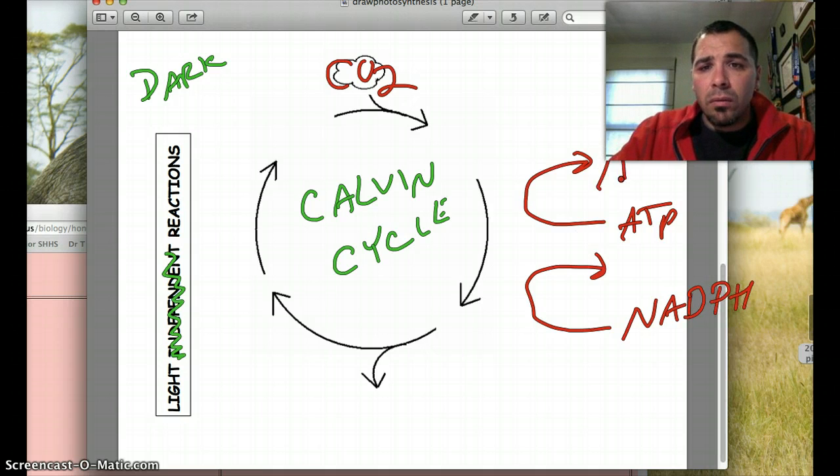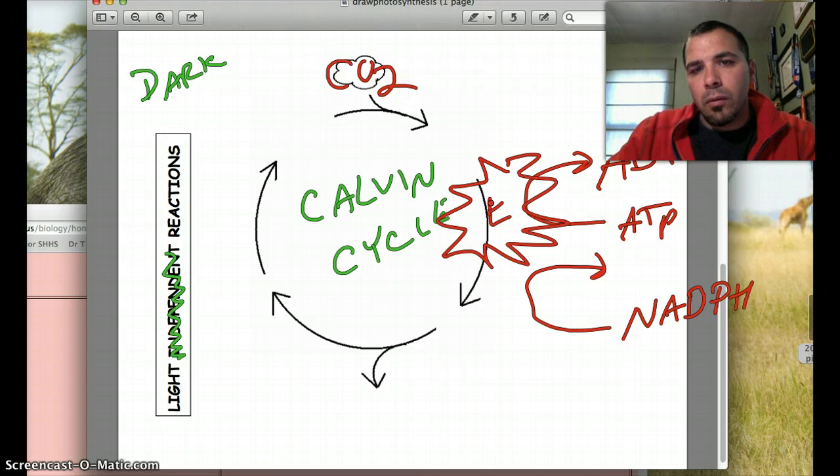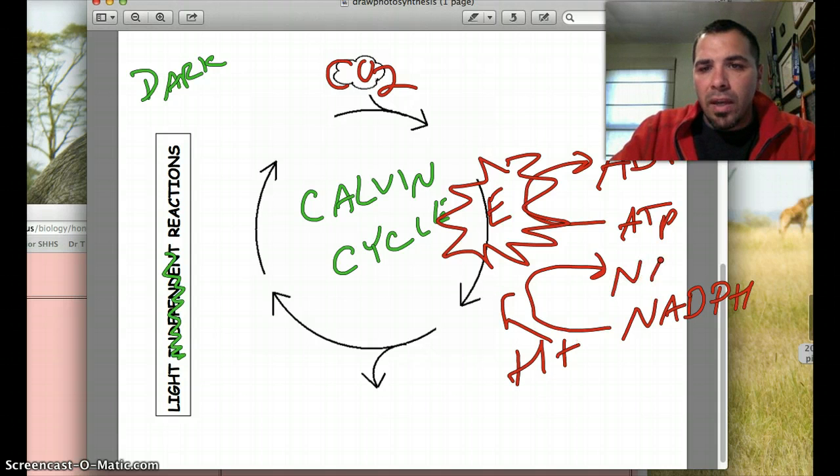ATP will become ADP, because when you're going from ATP to ADP, you release some energy. So I'm going to do my little kapow, a little bit of energy will be there. NADPH is going to donate some hydrogens and become NADP+.